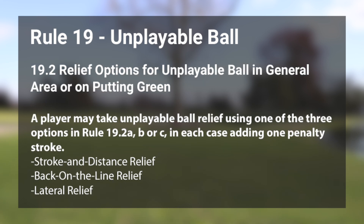Now, 19.2 talks about relief options for unplayable balls in the general area and or putting green. There are three relief options here and each of these options will result in a one stroke penalty. You can take your stroke and distance relief — you can take this relief at any time under any circumstances, especially with an unplayable ball, so you just go back to your original position where you hit your ball and take a drop under stroke and distance relief.